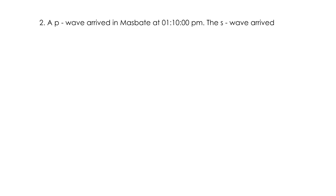For number 2: a P wave arrived in Masbate at 1:10 p.m. The S wave arrived at 1:17 and 20 seconds. How far away is the epicenter?